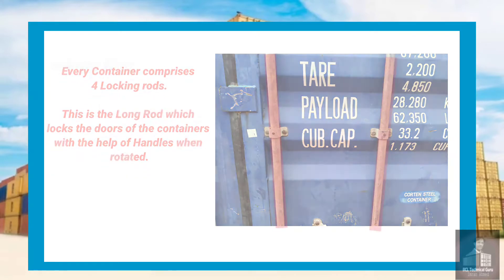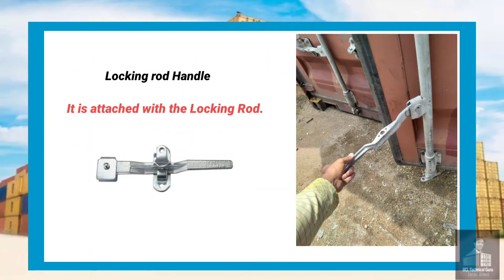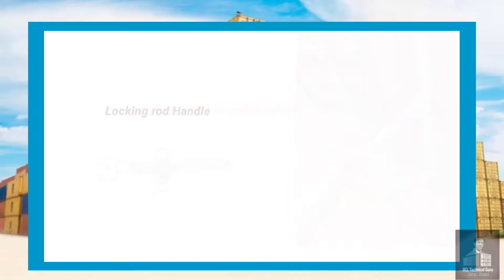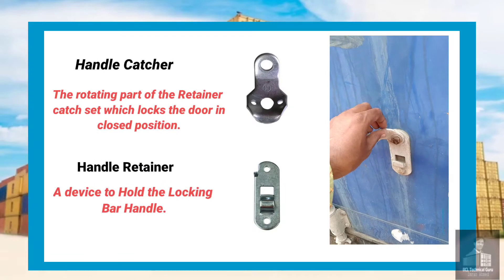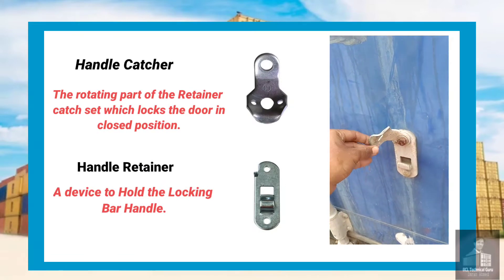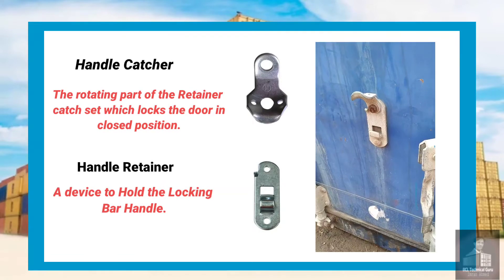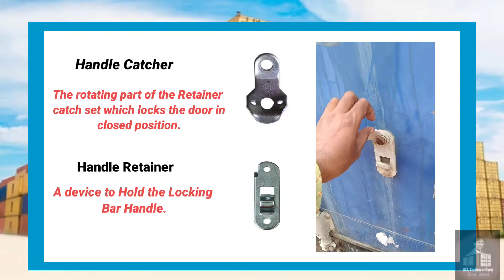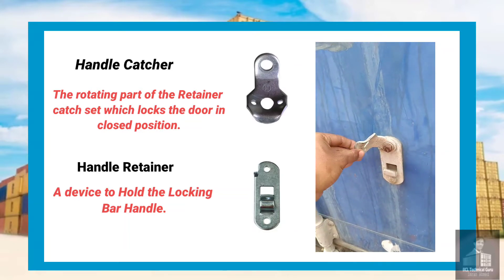Locking bar handle: it is attached with the locking rod. Handle catcher: the rotating part of the retainer catch set which locks the door in the closed position. Handle retainer: a device to hold the locking bar handle.